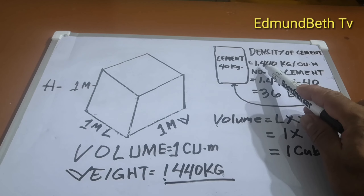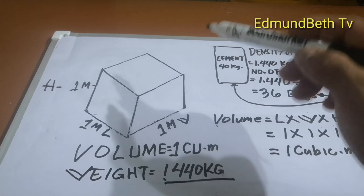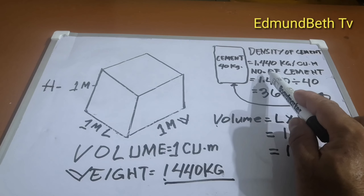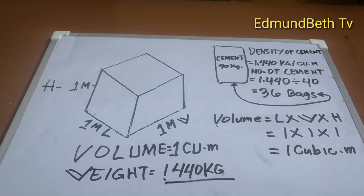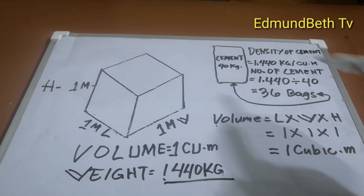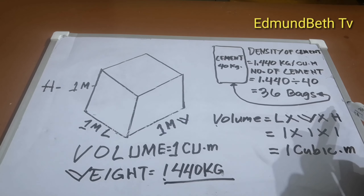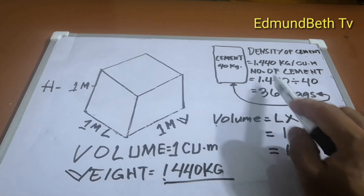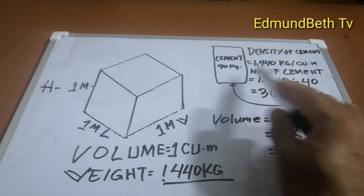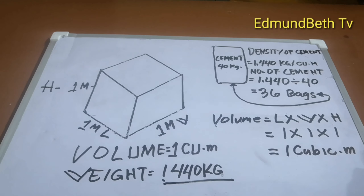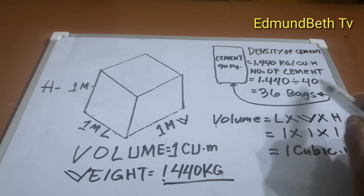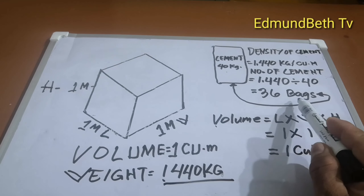So 1,440 kilograms per cubic meter — iyan ang density of cement. Dahil 40 kilograms po ang isang sako ng simento, para makuha natin kung ilang sako ng simento sa isang cubic meter, 1,440 divide 40 equals 36 bags of cement.